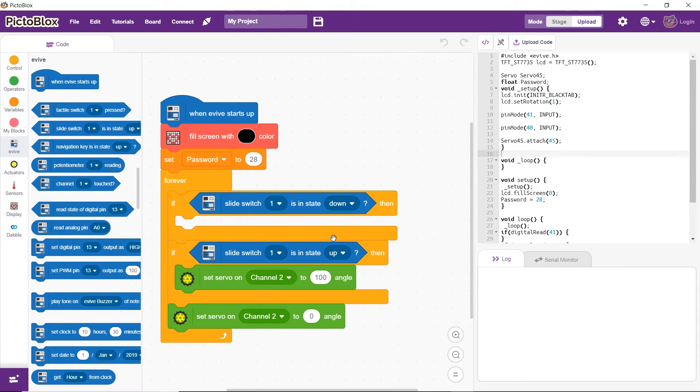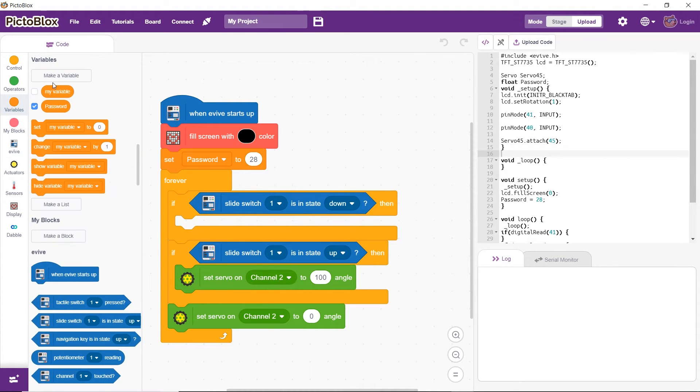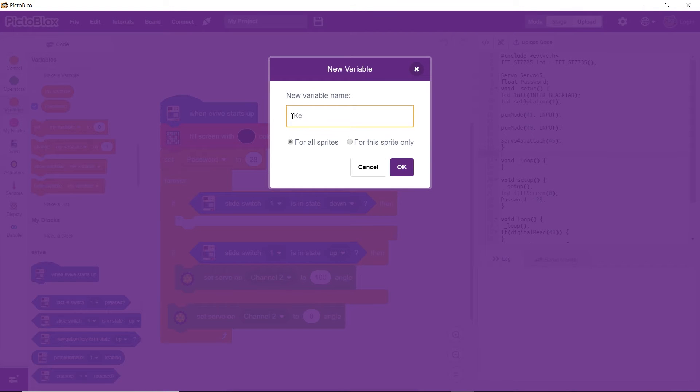Then, program evive such that the password can only be entered when the slide switch is down. The door will still remain locked.